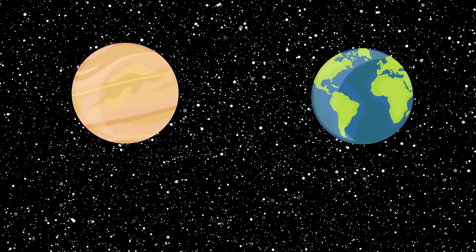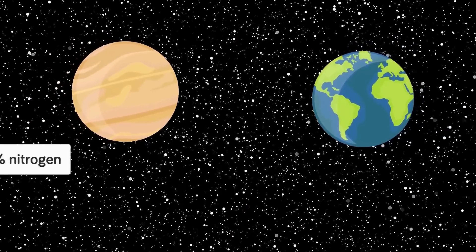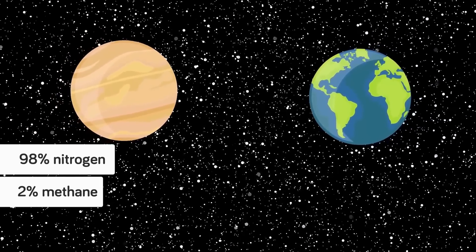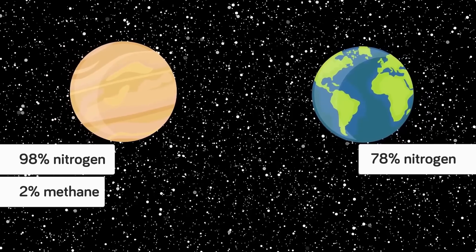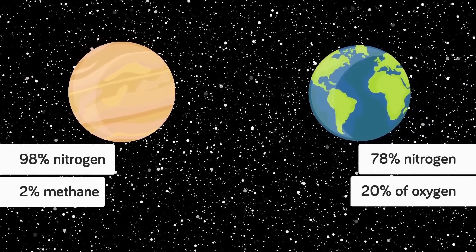The major differences are many, but the biggest factor is that its atmosphere is 98% nitrogen and 2% methane, unlike the Earth which is around 78% nitrogen and 20% oxygen, with gases like carbon dioxide and argon making up the rest.